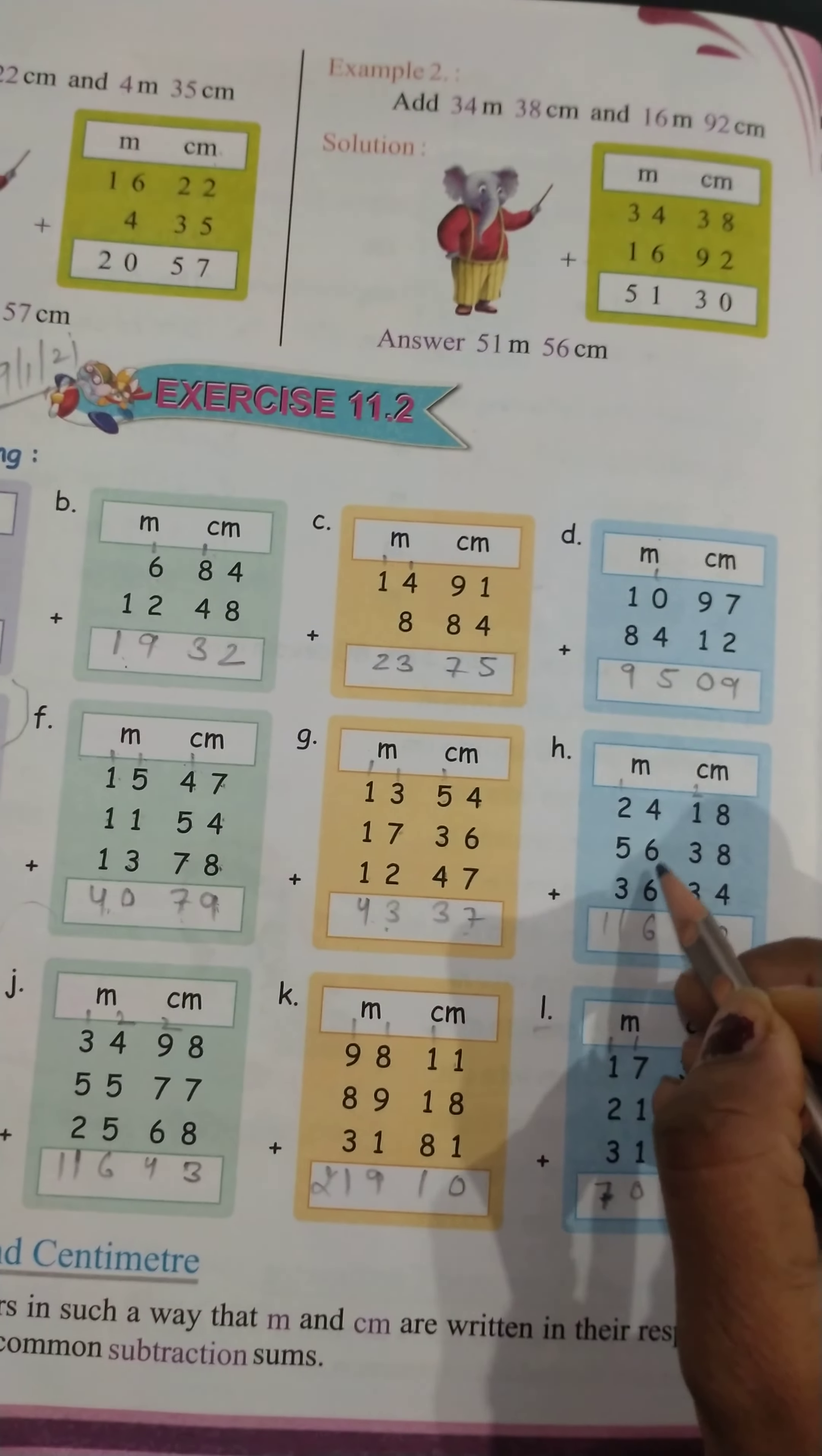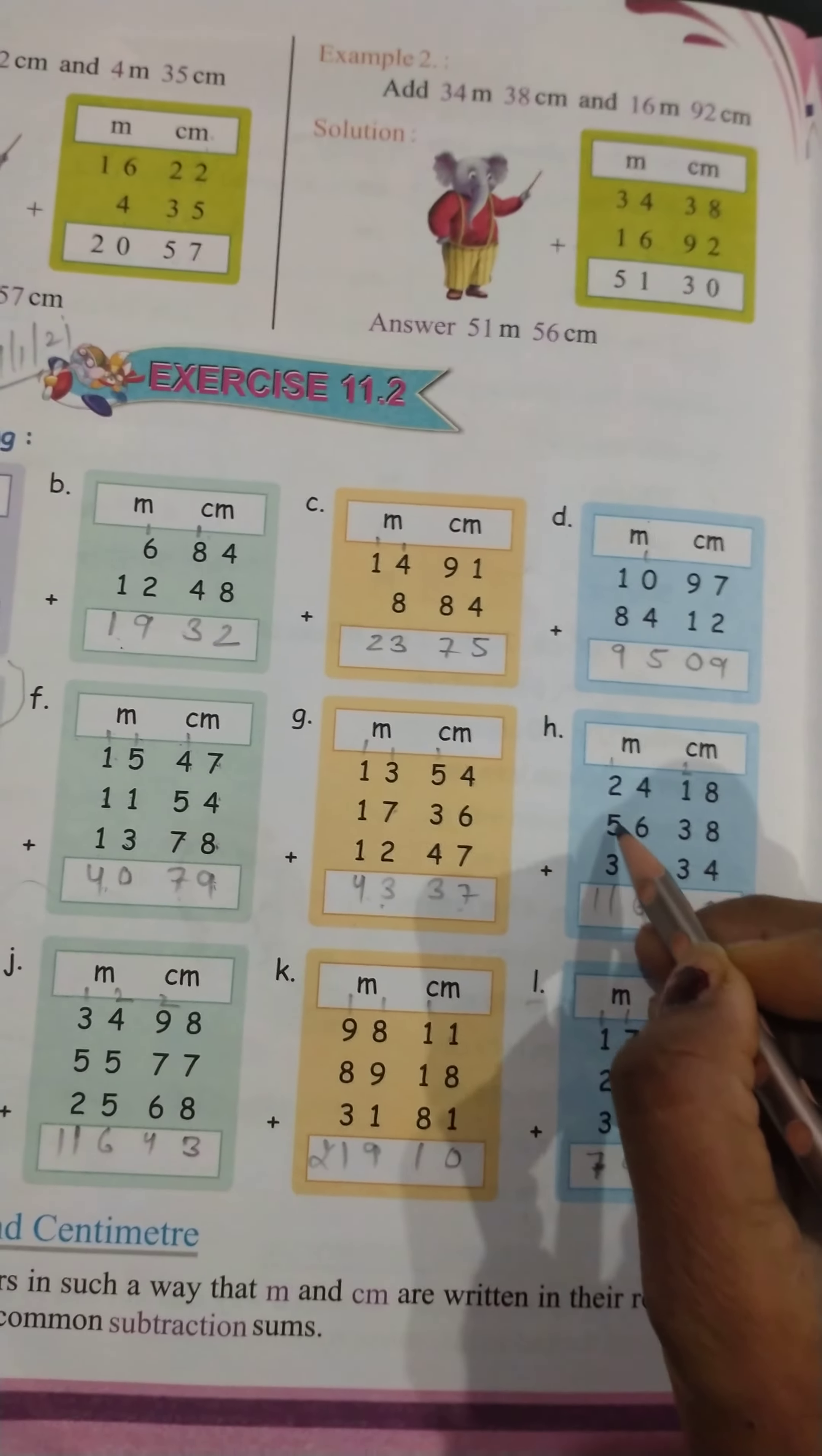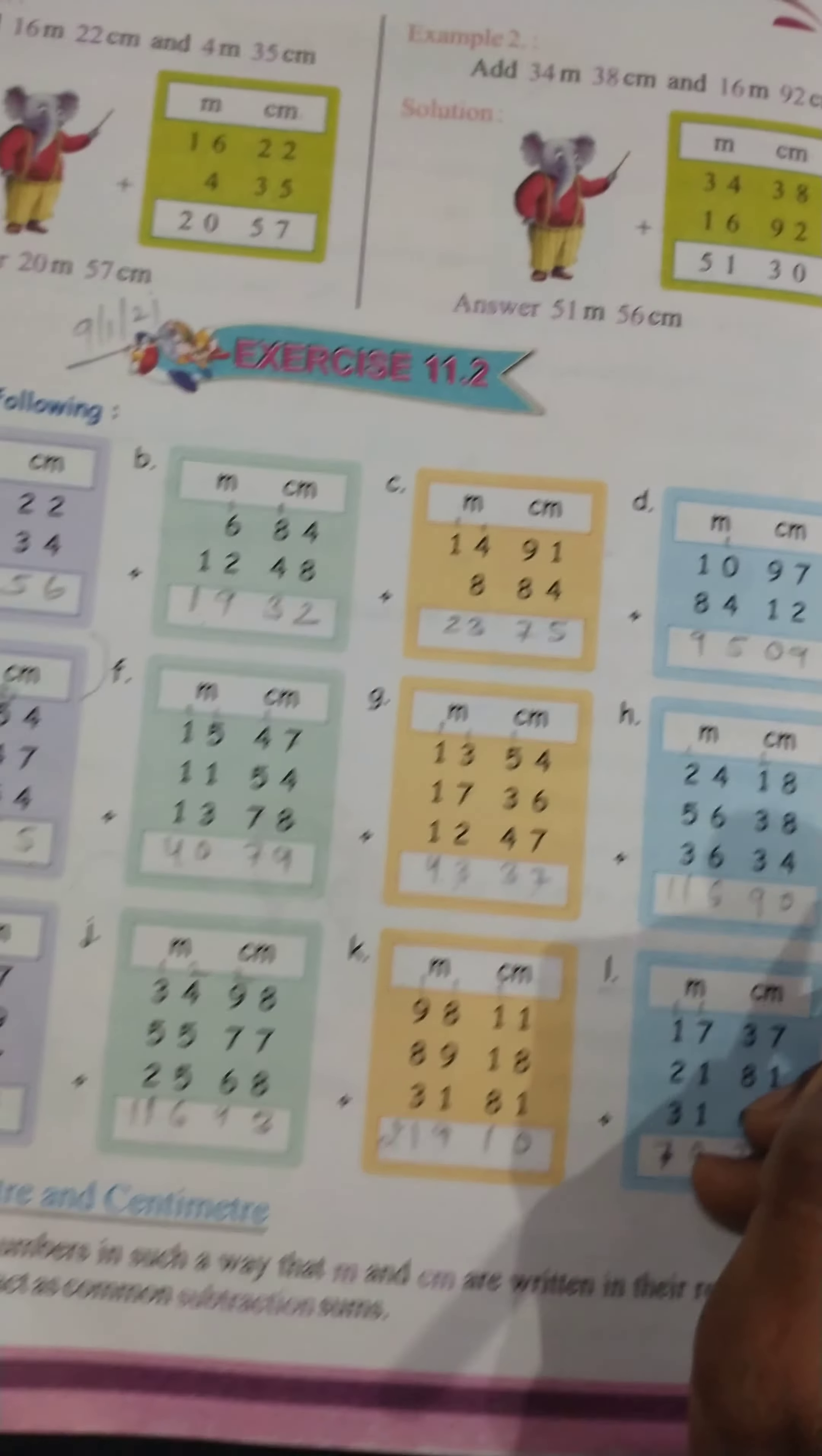4 plus 6, 10. 10 plus 6, 16. 16 come 1 carry. 2 plus 5, 7. 7 plus 3, 10. 10 plus 1, 11. 116 meter, 90 centimeter.